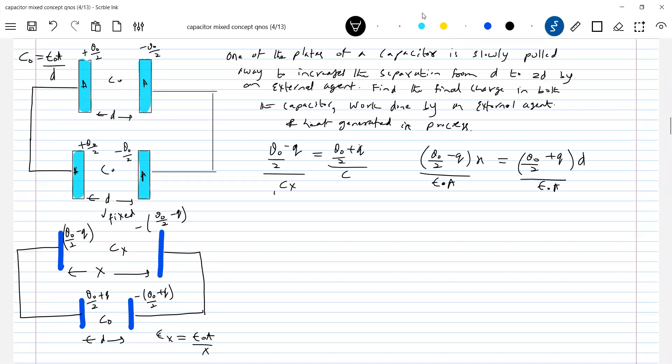A little bit some calculations are there. So there should be Q naught by 2 minus Q, epsilon naught A by X. Q naught by 2 plus Q, epsilon naught A by D. Solving this, I'll get expression for Q is equal to Q naught by 2 times X minus D over X plus D. The expression. Finally, what happened? The separation will become 2D. Substitute X equal to 2D. The final charge will be Q naught by 6. So I just directly wrote, I'm able to remember some data, this expression for charge here.